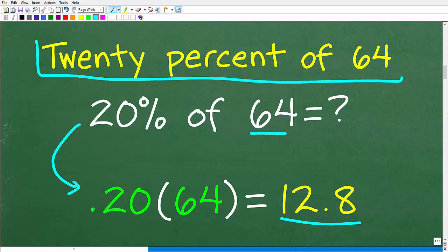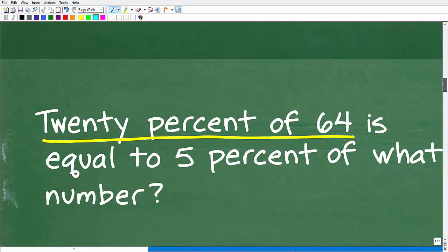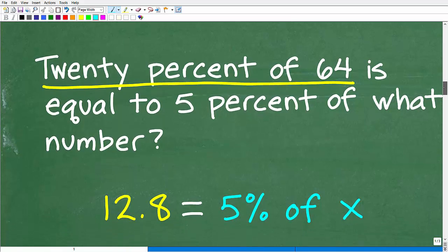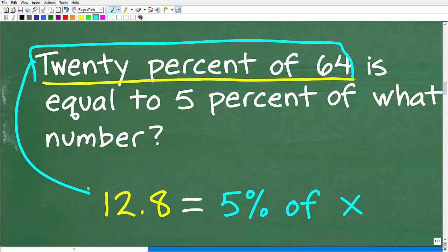So this part of the problem right here, 20% of 64, we could just kind of get rid of that and put in a 12.8. So we're going to approach this problem one segment at a time. And now let's go ahead and take a look at the problem. So we have 20% of 64, and now we know that that is 12.8. So we could just kind of rewrite this problem. 12.8 is equal to 5% of what number?